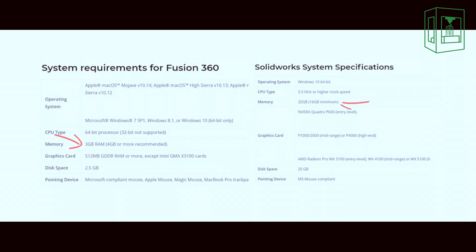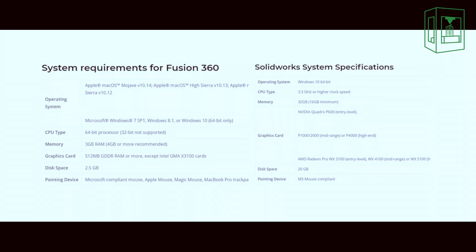In terms of memory, Fusion 360 requires 3 gigabytes of RAM while SolidWorks requires 16 gigabytes minimum but recommends 32. SolidWorks also requires more disk space than Fusion 360 — specifically 20 gigabytes compared to Fusion 360's 2.5 gigabytes. This is because SolidWorks was originally designed to store everything on the computer, whereas Fusion 360 stores everything in the cloud. Both also require upgraded graphics cards for peak performance, especially if you intend to use the rendering features.